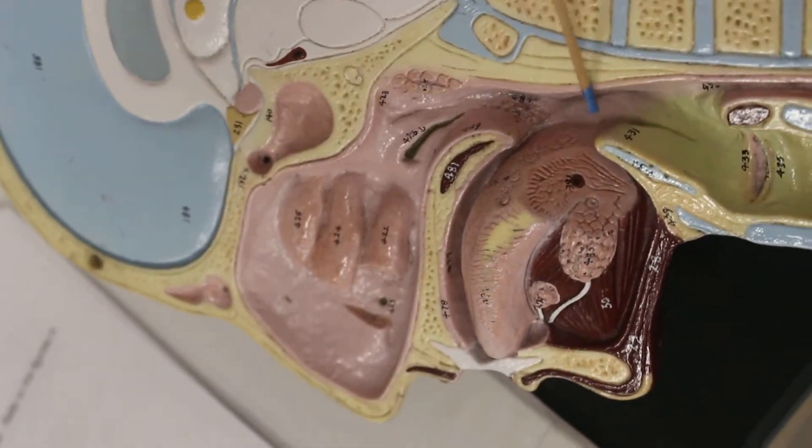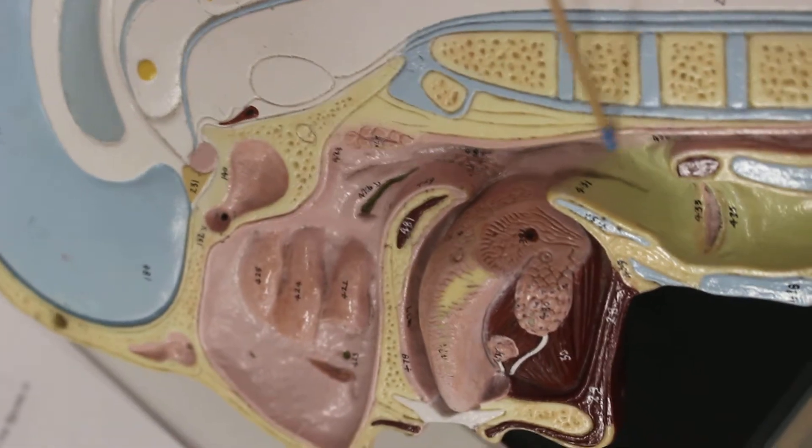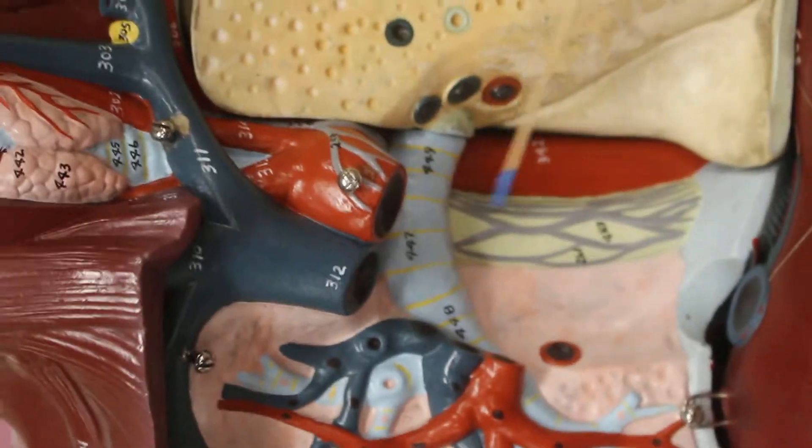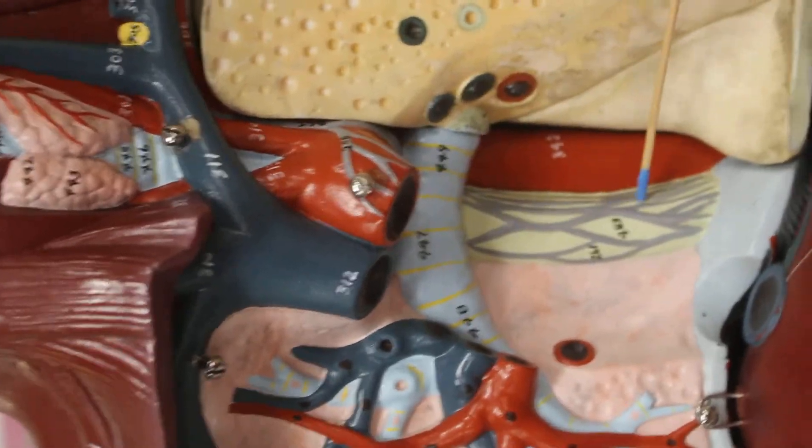Also able to see here is the oral pharynx and the laryngopharynx leading to the esophagus. The esophagus then continues through the thoracic cavity behind the heart.